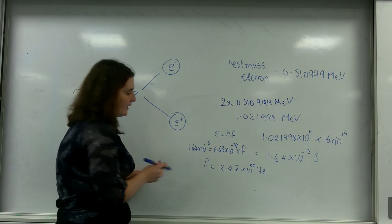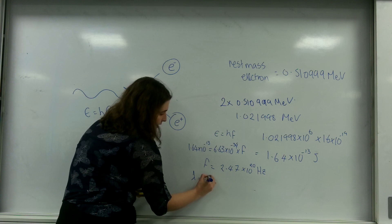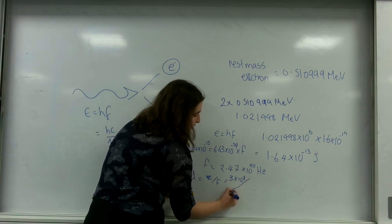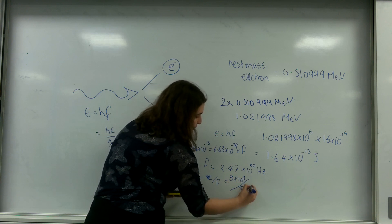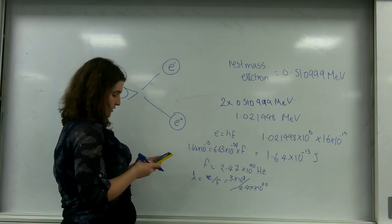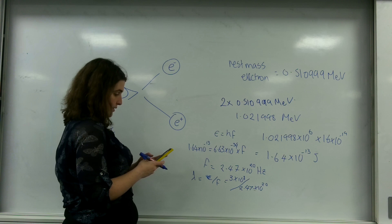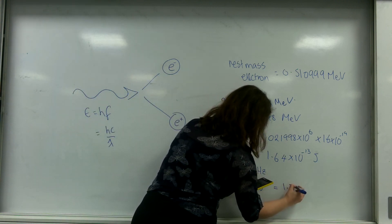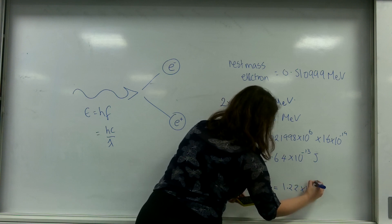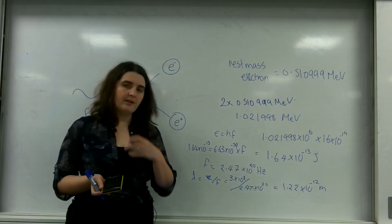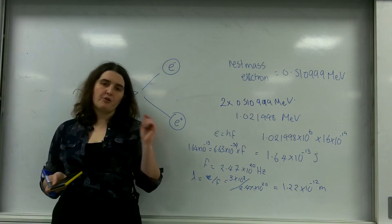And my wavelength would be speed of light divided by the frequency. So that's 3 times 10 to the 8 divided by 2.47 times 10 to the 20, which is 3 times 10 to the minus 12 meters. So that there is my wavelength, my minimum wavelength of my photon.